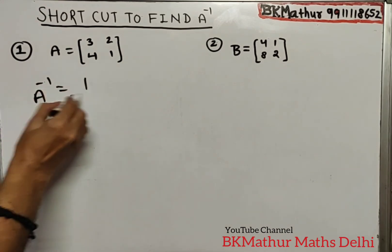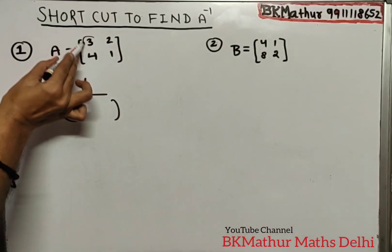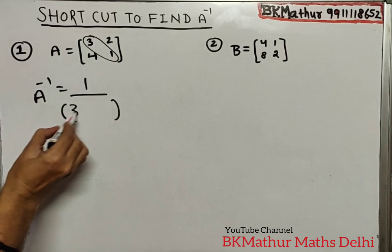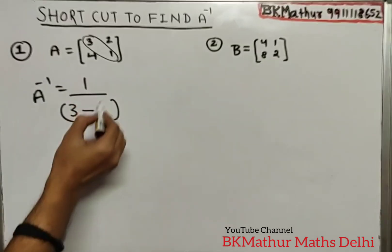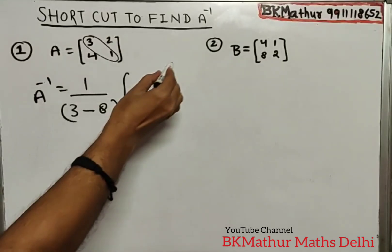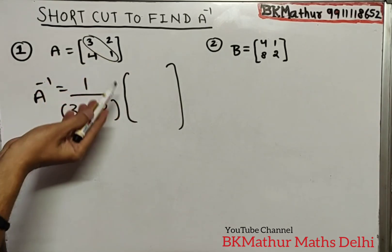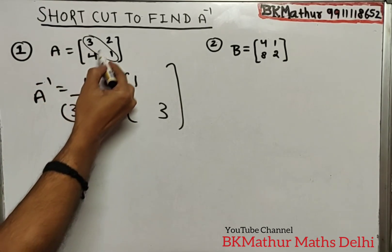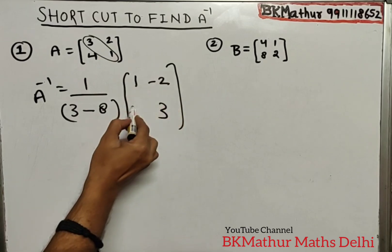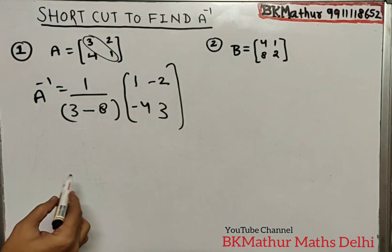A inverse is 1 upon determinant. First, the diagonal multiply will be kept, minus non-diagonal. Then the diagonal two numbers shuffle, and the non-diagonal elements will have sign changes: plus becomes minus, minus becomes plus.